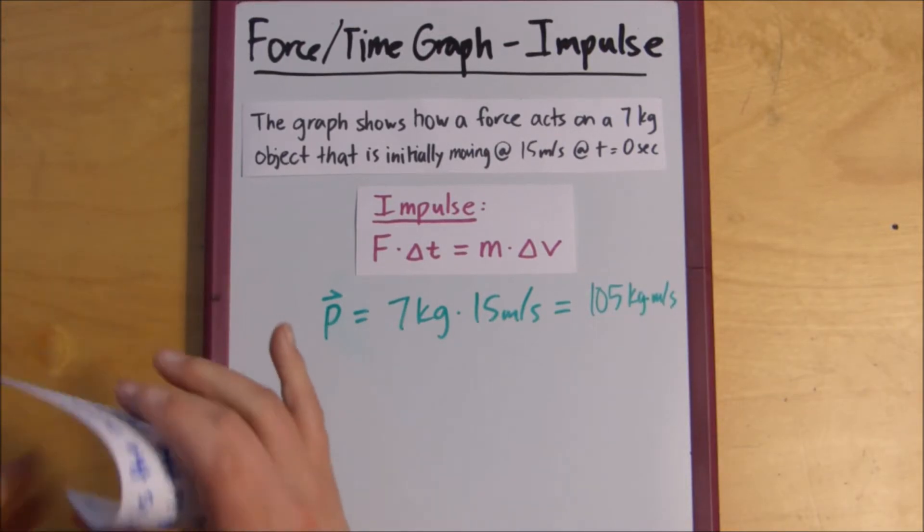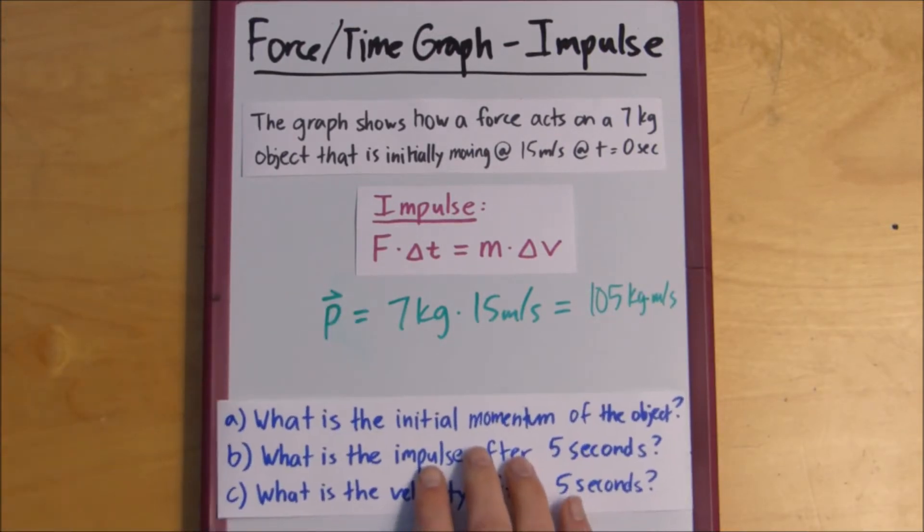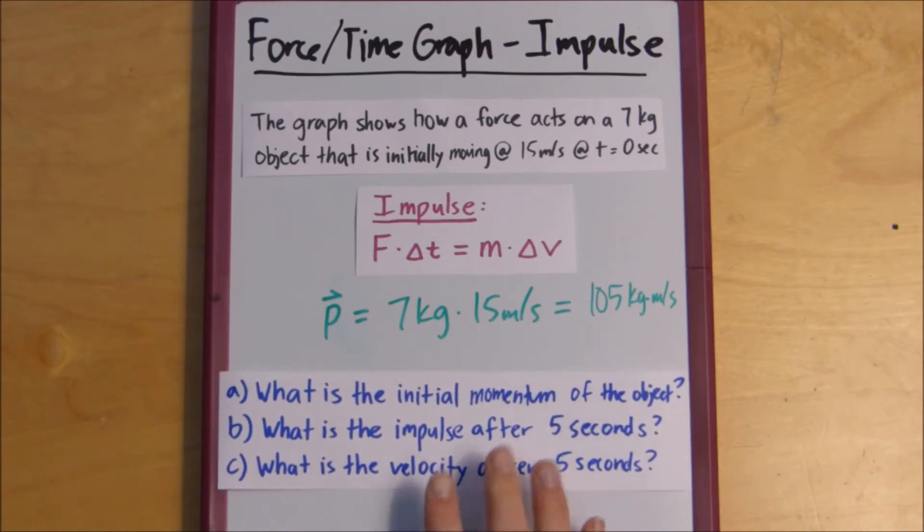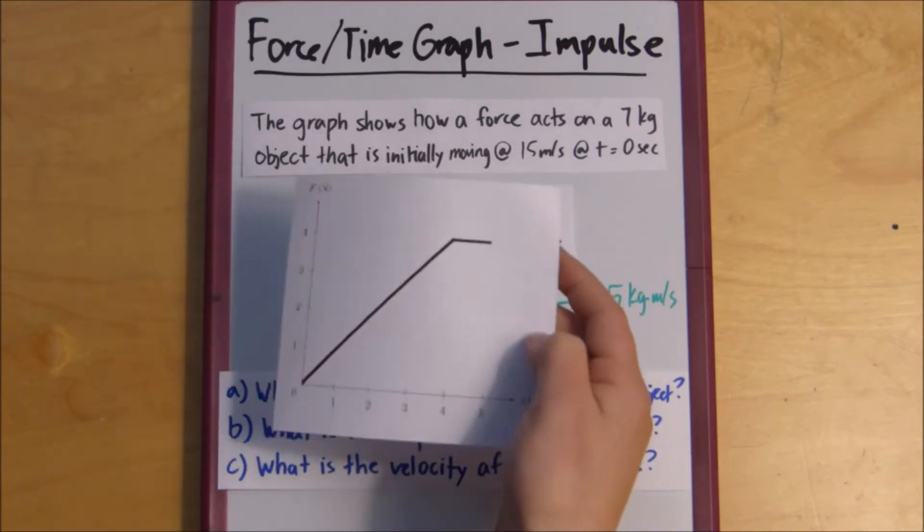So, that's the answer to A, what is the initial momentum of the object. So, now, if we want to find the impulse after 5 seconds, we're going to use the graph that was provided, right?